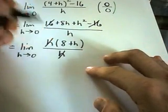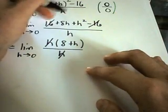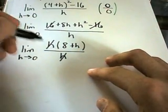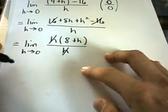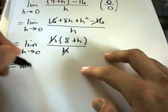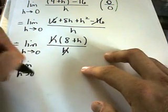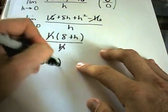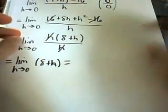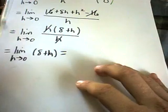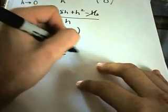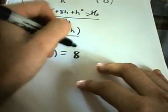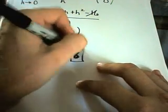Now I can cancel out my h's. And this h in the bottom is what's giving me some problems, because I'm dividing by 0. So I'm left with the limit as h approaches 0 of 8 plus h. We go back to plugging and chugging. If you plug in h equals 0, we're left with 8. And that is our solution.